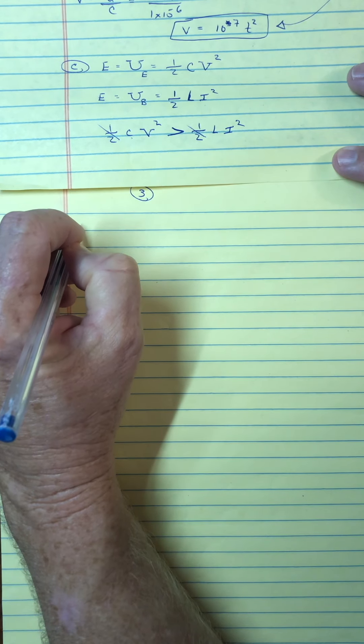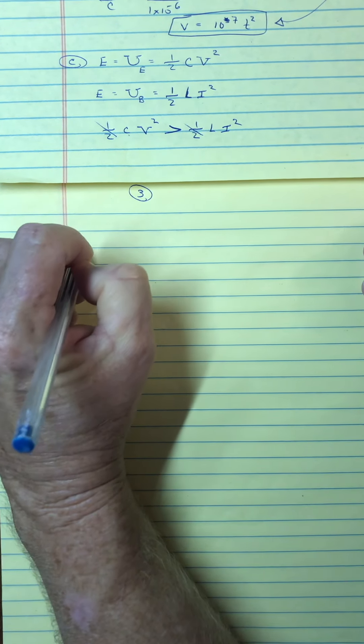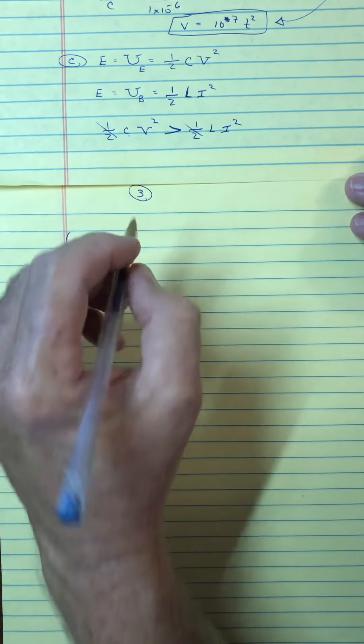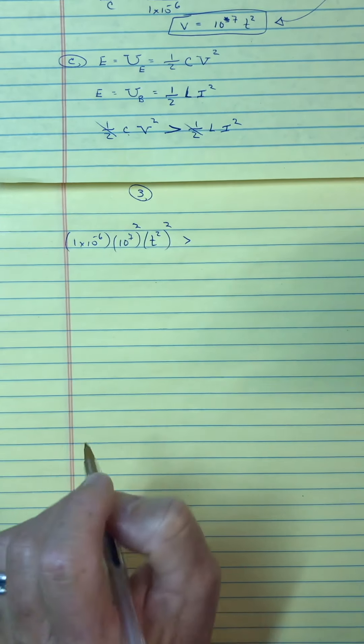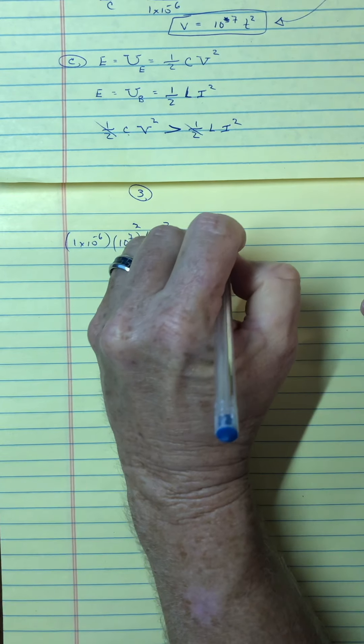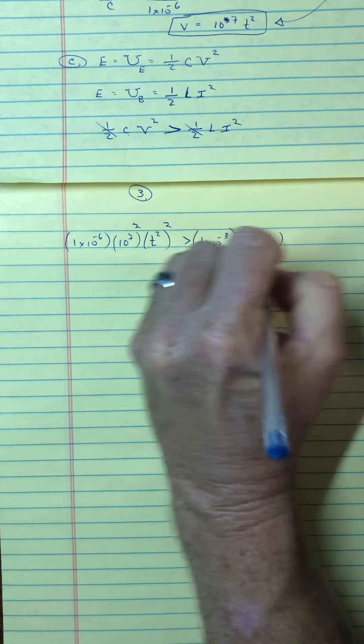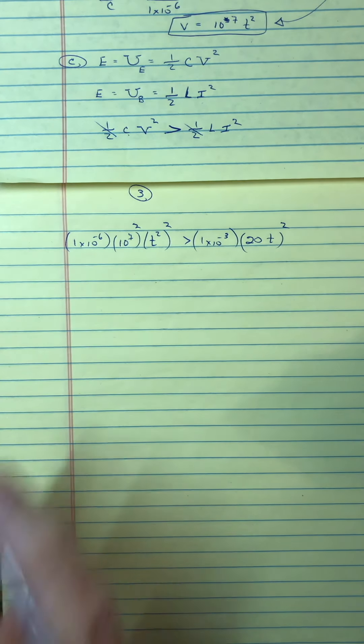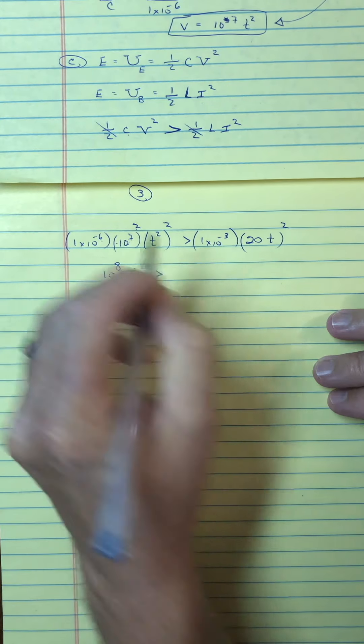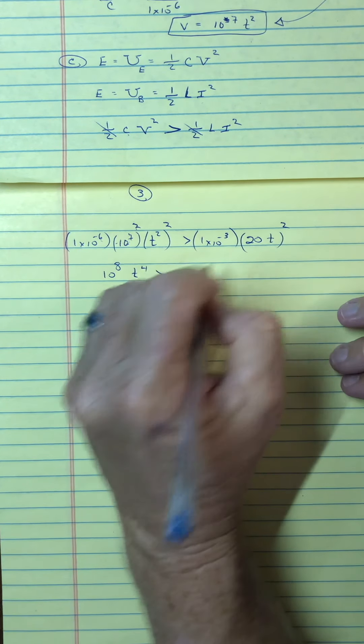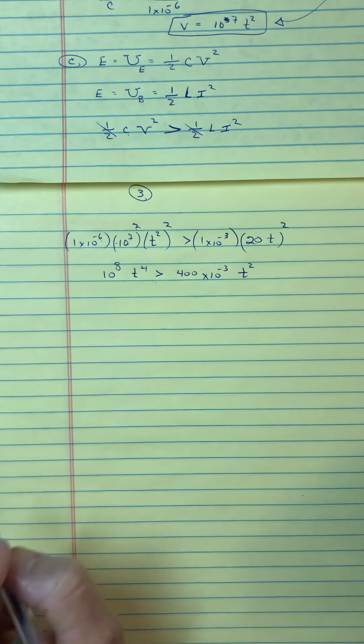Maybe the first thing I'll do is cancel off a one half on each side. And, the capacitor was the one microfarad. So, I'm going to go one microfarad times the voltage squared. So, that would be 10 to the 7th squared and T squared squared. When is that greater than? And so, here's the inductance, one milli. And, here's the current. So, 20 T squared. All right. Well, it looks like we've got a bunch of powers of 10 here. It looks like this is 14, 14 minus 6 makes 10 to the 8th. This makes T to the 4th. This would be 10 to the minus 3. But, 20 squared is 400 and this would be T squared.